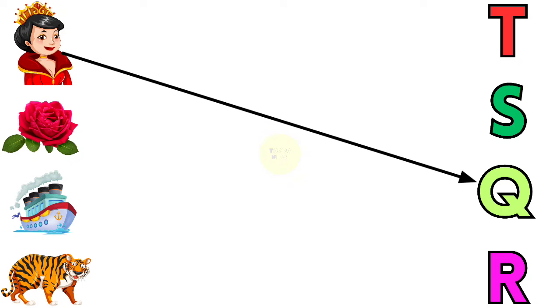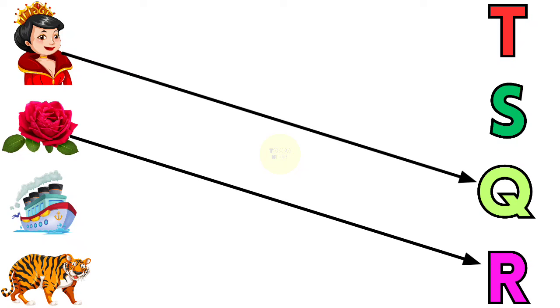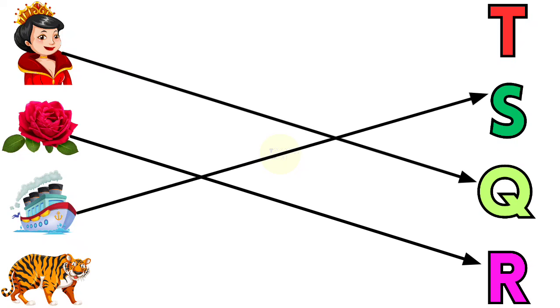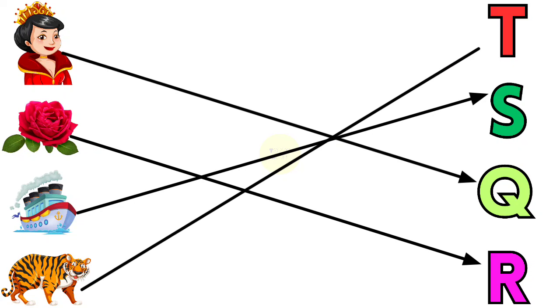Q for queen, R for rose, S for sheep, T for tiger.